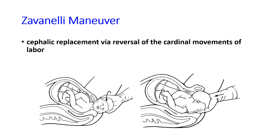The Zavanelli maneuver is used if all other measures fail. Since the head has already been delivered and the shoulder is inside the pelvis, all the cardinal movements of delivery are reversed — crowning, restitution, and internal rotation — effectively reinserting the head back into the pelvis. The mother can then be taken for cesarean section.